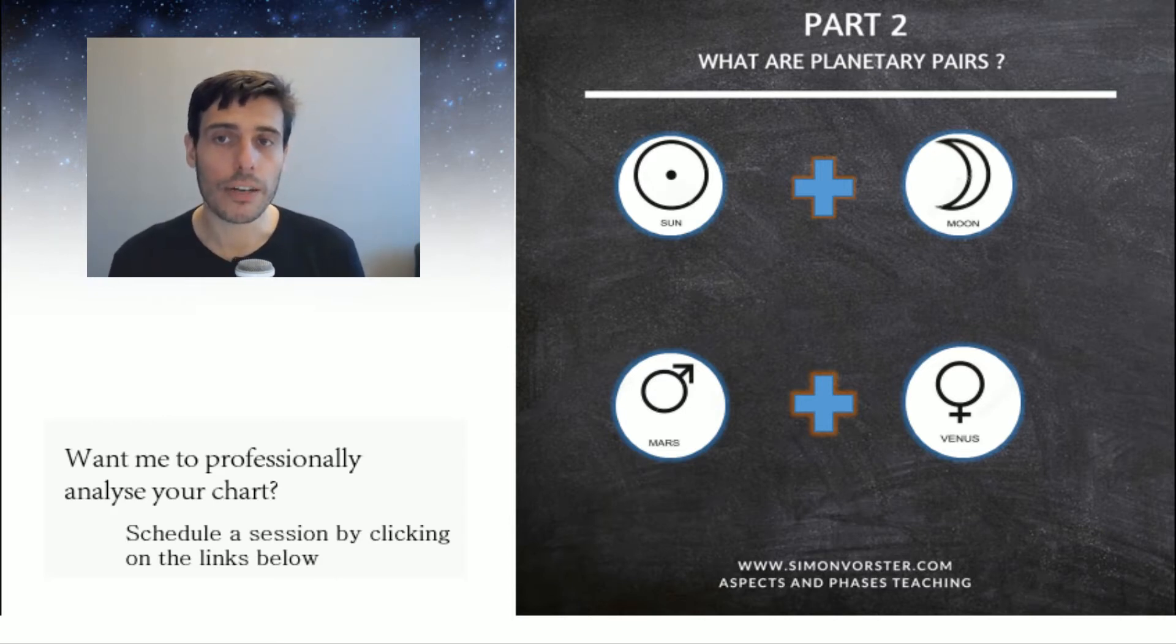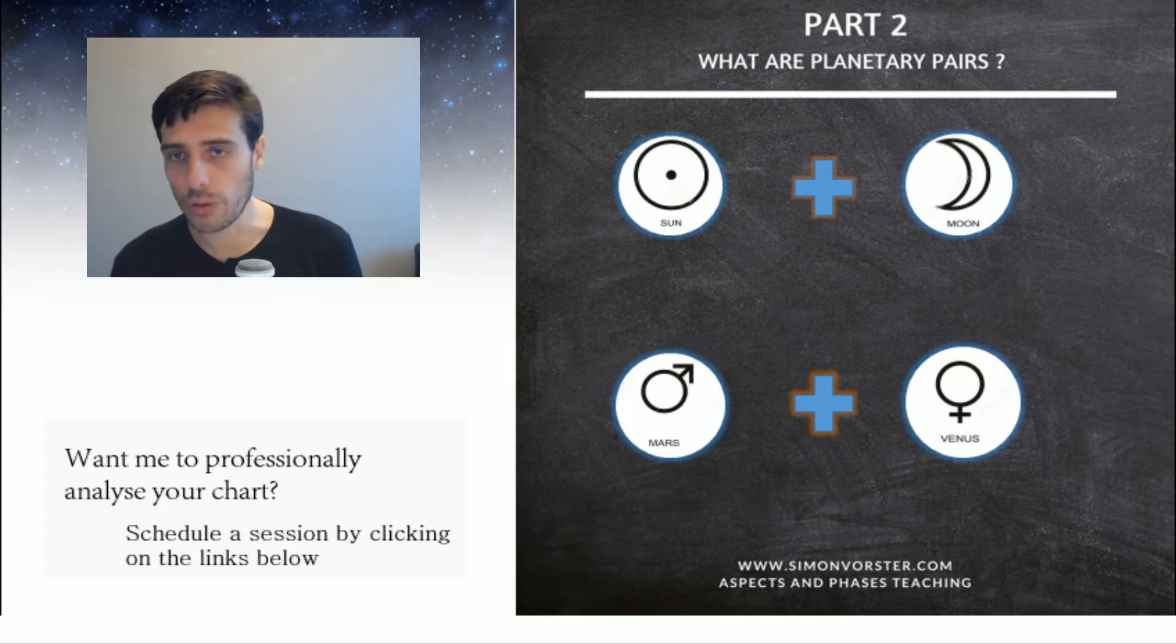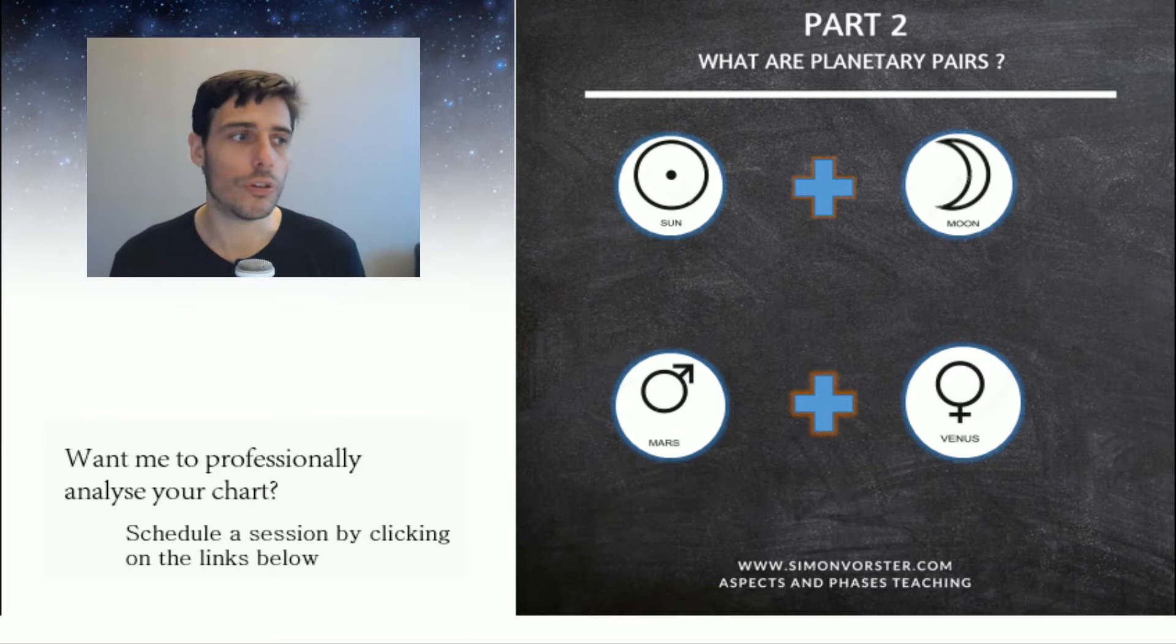So what planetary pairs does is it says there are certain planetary pairs that exist: Saturn-Moon, Jupiter-Mercury, Uranus-Mercury, Neptune-Venus as an example, and Mars-Pluto will tell you how your soul is developing itself and how the creative processes is existing for you individually.